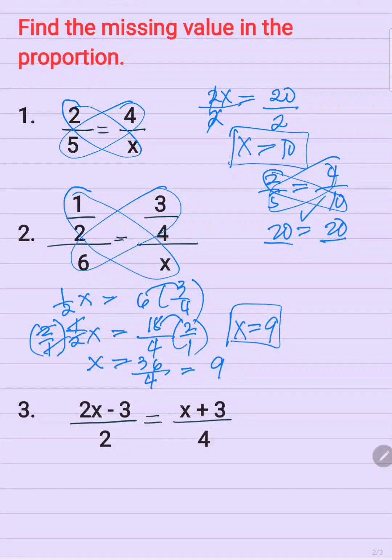Or you can also simplify here: 2 and 4 divided by 2 — this becomes 1, and this becomes 2. So 18 divided by 2 is equal to 9.